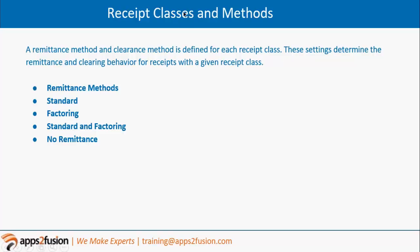So basically receipt classes and receipt method define what is the method of payment - how the customer is paying you, whether they are paying by internet banking, net banking, doing a wire transfer, paying a check, paying cash, manual payment. Which method they are paying you - for that you need to define this receipt method.